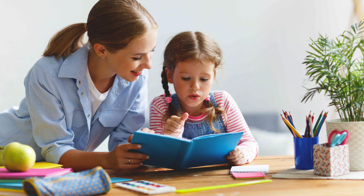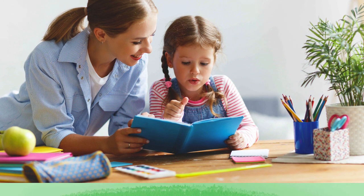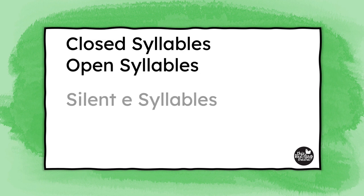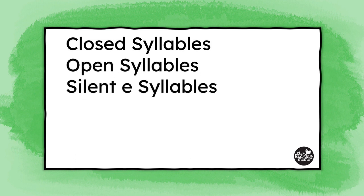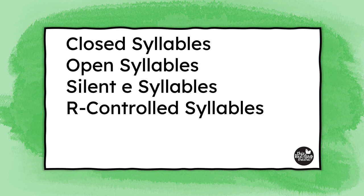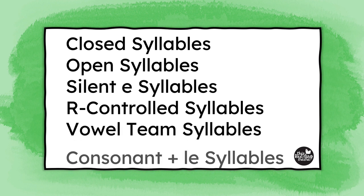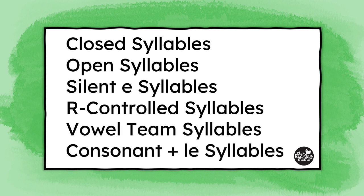Learning the six syllable types can help our readers find common patterns they know in longer words. The six syllable types include closed syllables, open syllables, silent E syllables, R-controlled syllables, vowel team syllables, and consonant plus LE syllables, sometimes called final stable syllables.